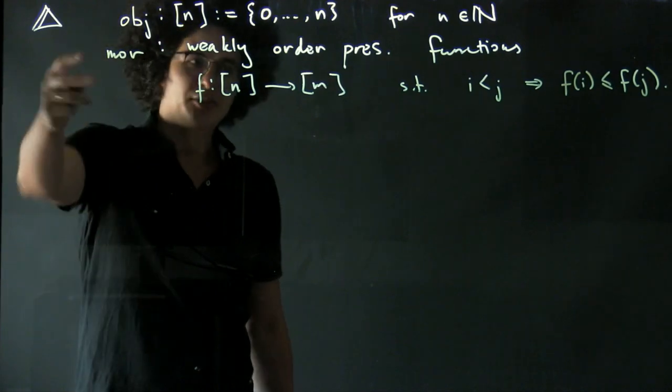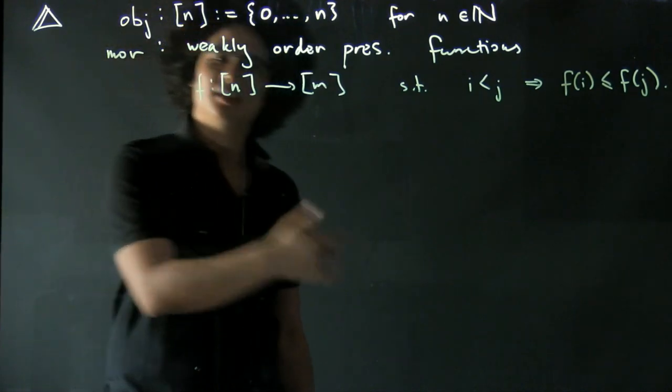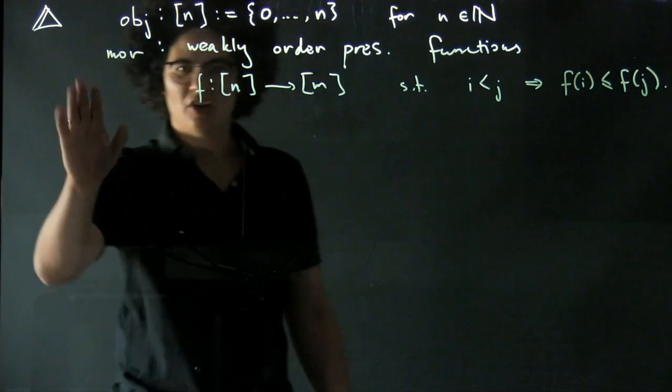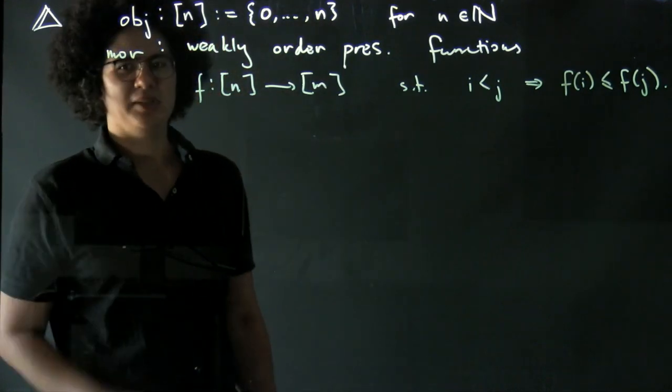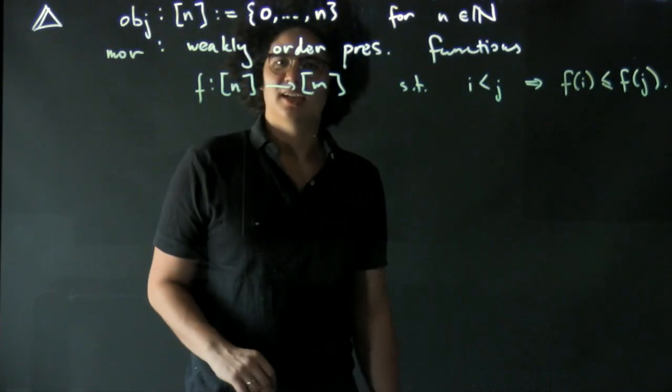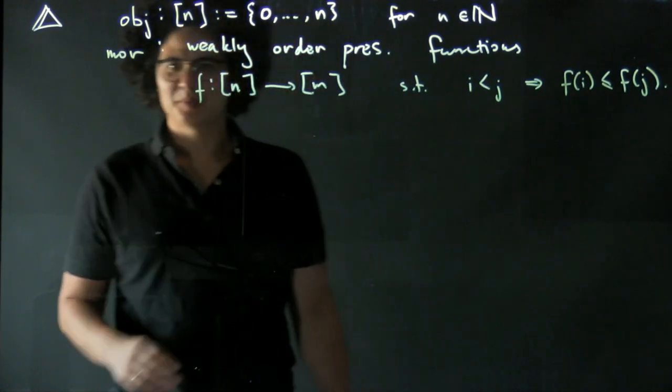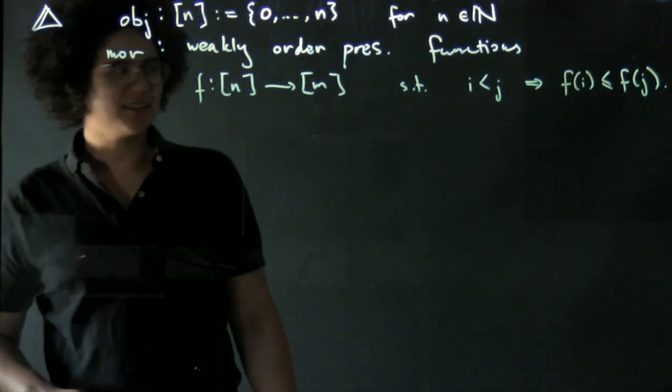And the thing that you should check is that weakly order-preserving functions compose to give weakly order-preserving functions. Our composition in this category is just going to be composition of functions. The identity morphisms are just the identity functions on the sets.